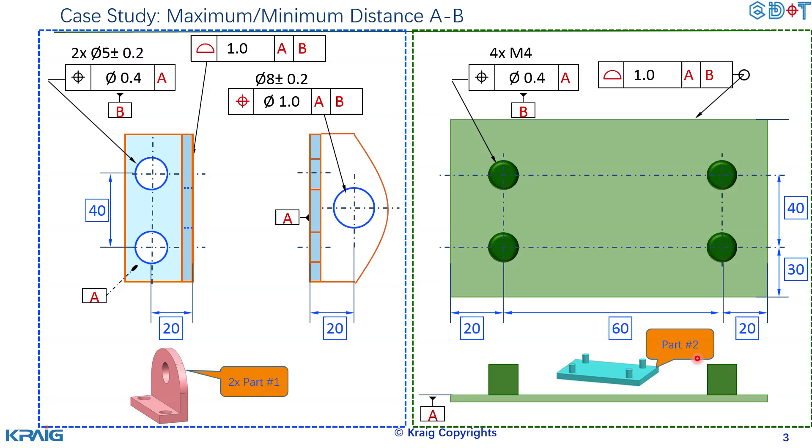Let's look at part number two. We use the top surface here as datum A and we use the bolt M4 times 4 and it has a pattern position 0.4 reference to A and here's datum B. Basically those four bolts is datum B. And here there's an edge profile.